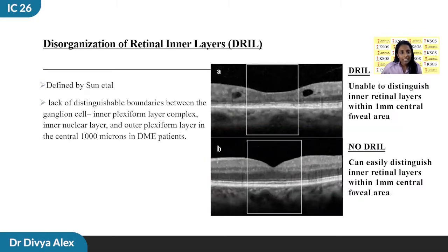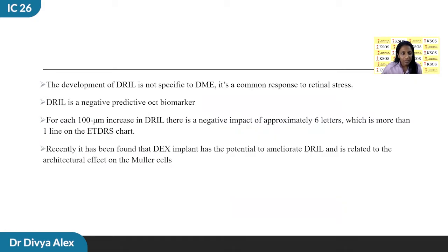DRILL can be defined as a lack of distinguishable boundaries between the ganglion cell inner plexiform layer complex, inner nuclear layer, and outer plexiform layer in the central 1 mm. This was defined by Sonata et al. Normally, each inner retinal layer can be clearly distinguished, but in the case of DRILL, it is impossible to distinguish the inner retinal layers. The development of DRILL is not specific to DME; it is a common response to retinal stress. It is a negative predictive OCT biomarker — for each 100-micron increase in DRILL, there is a negative impact of approximately 6 letters. The DEX implant has potential to ameliorate DRILL, related to its architectural effect on the Muller cells.